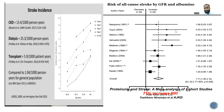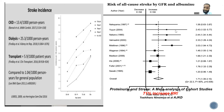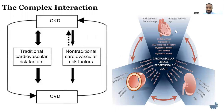Independent of what the eGFR looks like, a patient with proteinuria has high cardiovascular risk and you must act quickly. So it is not just the eGFR alone — eGFR and proteinuria independently correlate with worse cardiovascular outcomes. This is why as nephrologists we have a very low threshold for both albuminuria and decline in kidney function.